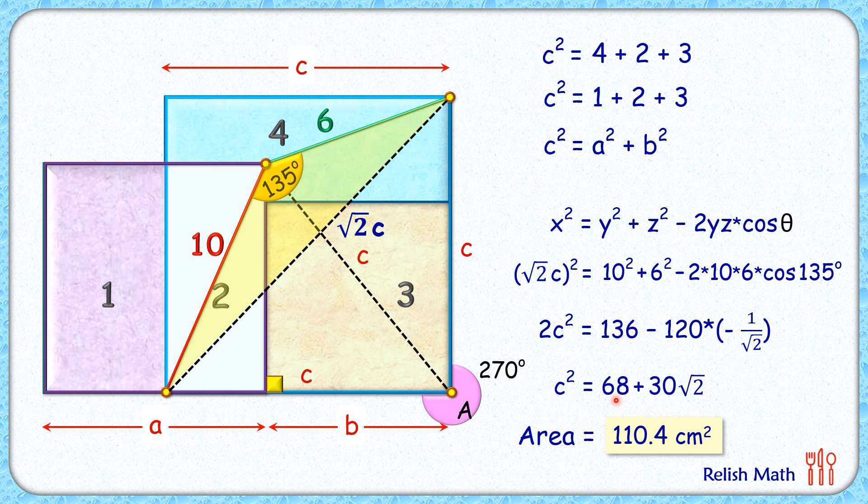Writing it in decimal form, we'll get area of this blue square as 110.4 centimeter square, and that's our answer. I hope you enjoyed the solution. I will see you in next video. Till then, tata, bye bye.